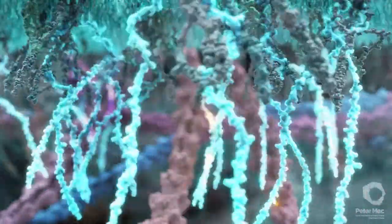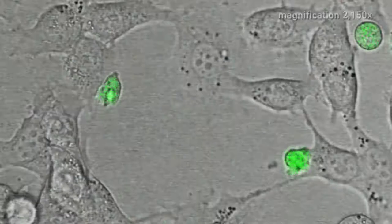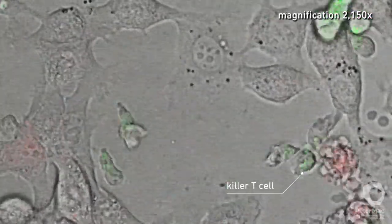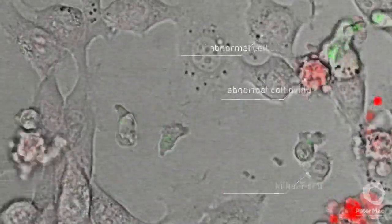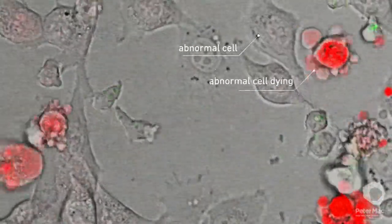The killer T cell is then ready to attack. The killer T cell shown here in green releases deadly toxins which destroy the abnormal cells, which turn red.